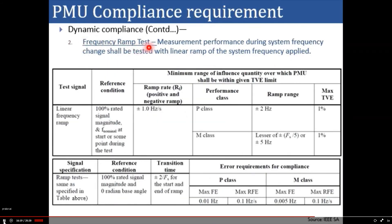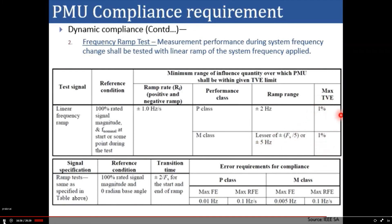For the frequency ramp test, measurement performance during frequency change is tested using a linear ramp of 1 Hz per second (ramp up and ramp down). For P class, the ramp range is ±2 Hz; for M class, it is the lesser of ±(frame reporting rate / 5) or ±5 Hz. In both cases, TVE should be ≤1%. For M class, the maximum frequency error is 0.005 Hz and the maximum ROCOF error is 0.1 Hz/s.